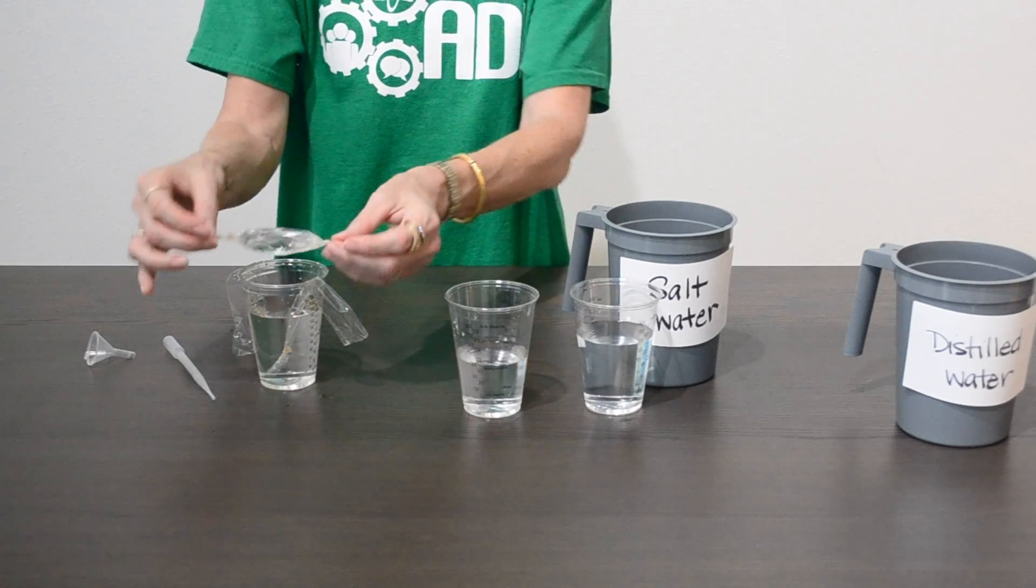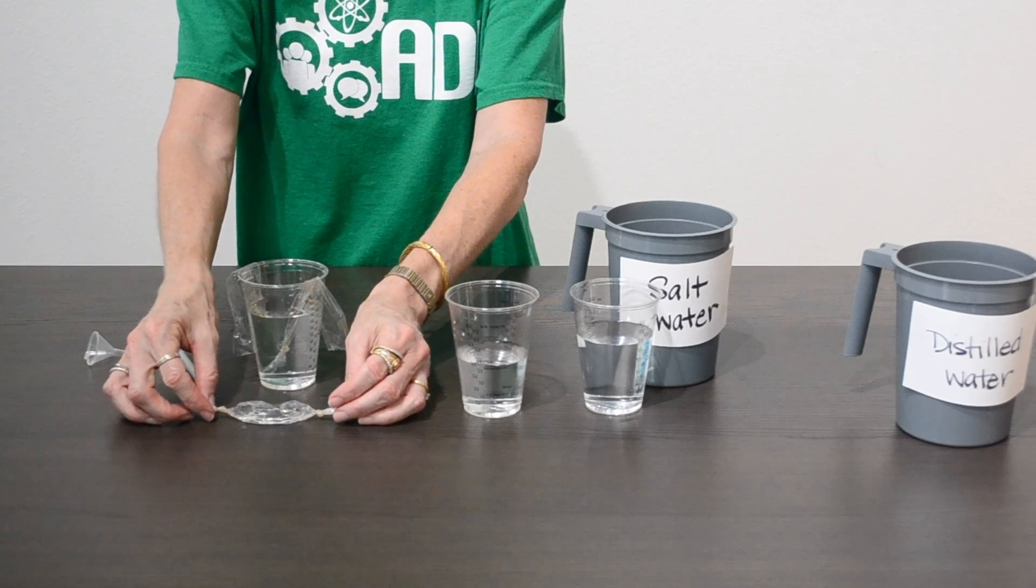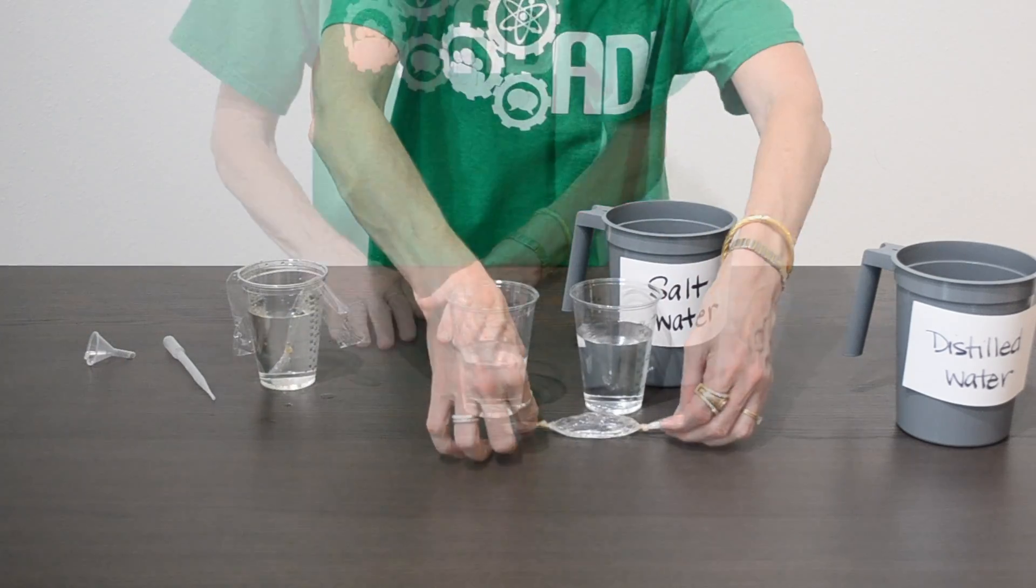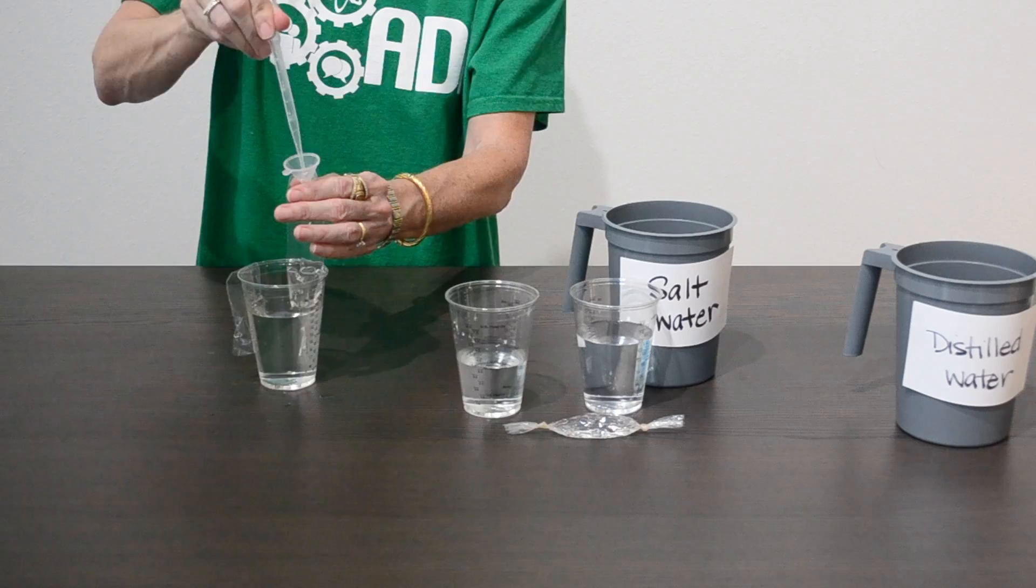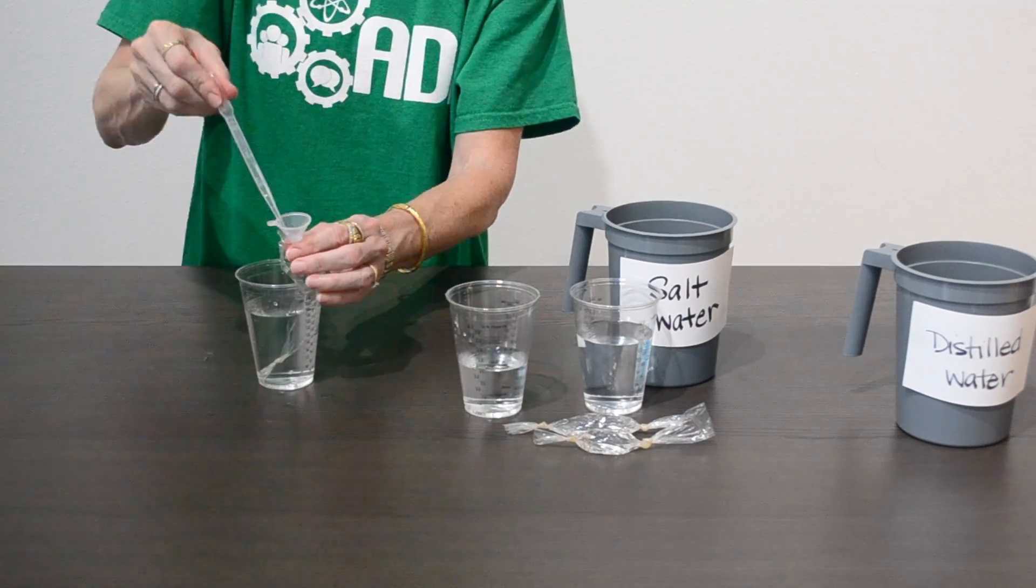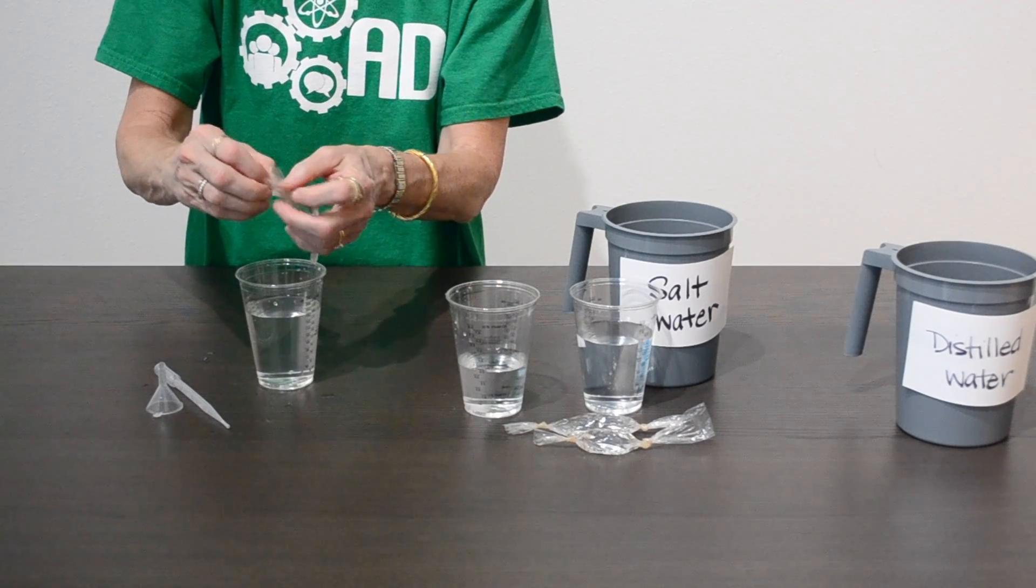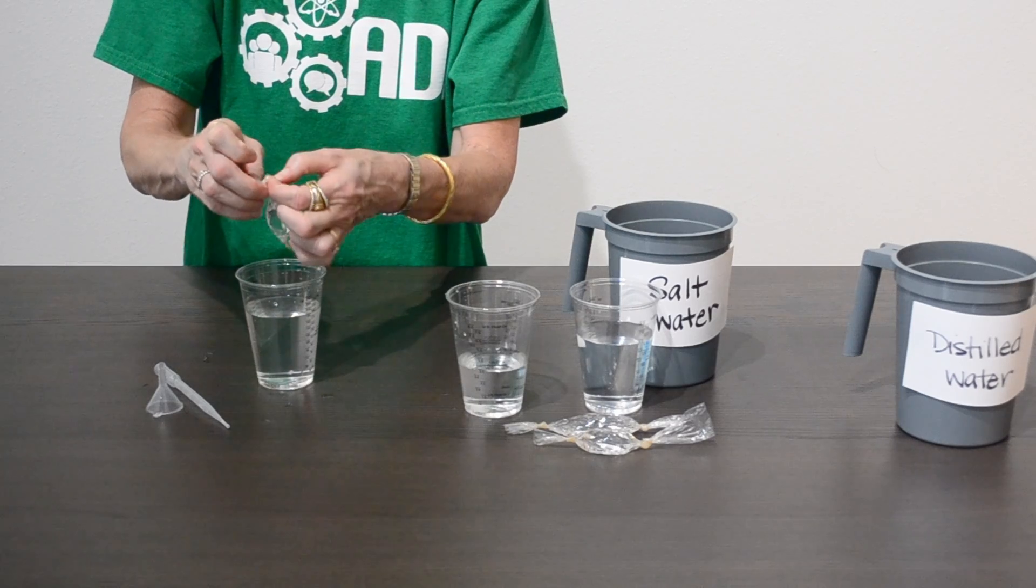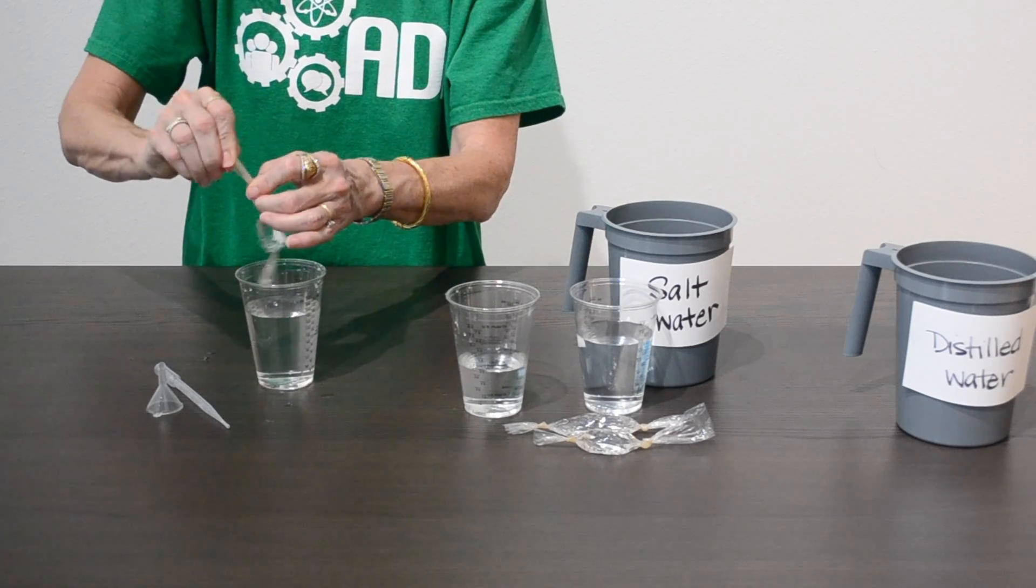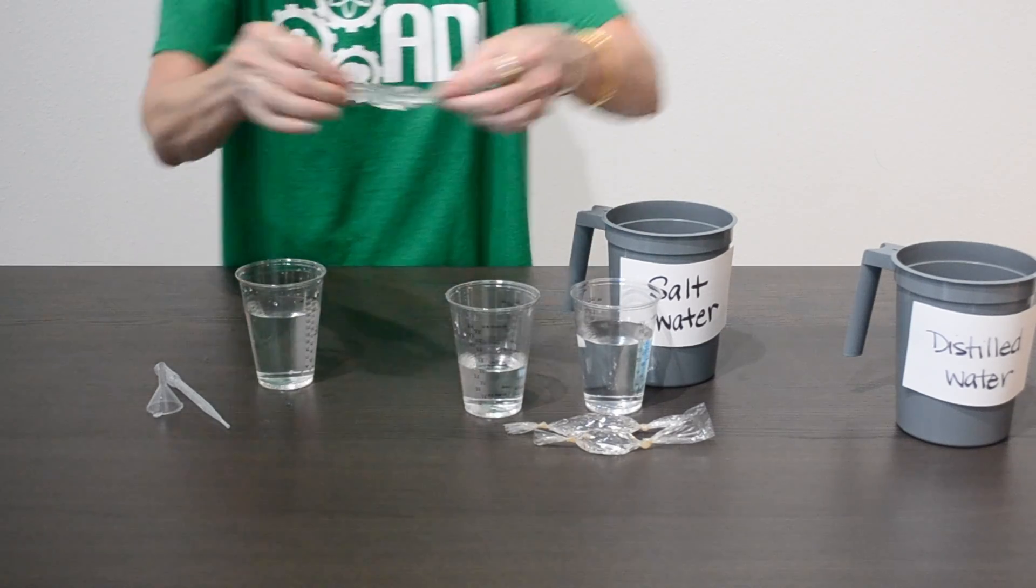Once you have this first one made, you're going to repeat this process with the other two pieces of tubing. Your student groups will now have three cells to use in their investigation.